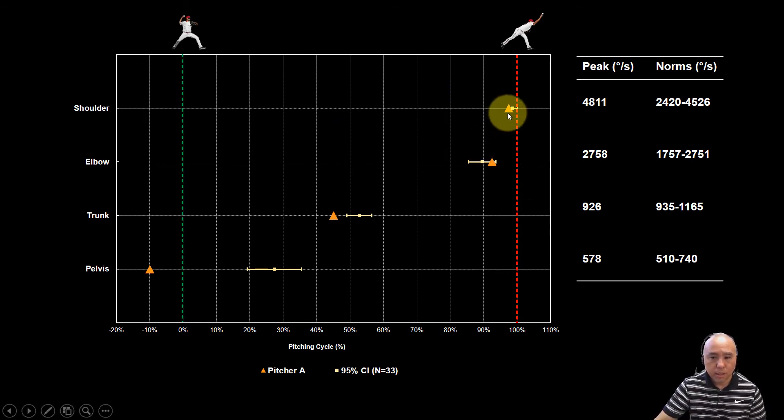Where it peaks just right before, we're talking a few milliseconds, right before the shoulder reaches its internal rotation velocity, its peak rotation velocity at ball release. This red line represents ball release. So that's just a few milliseconds. This was, for all intents and purposes, happening at the same time.